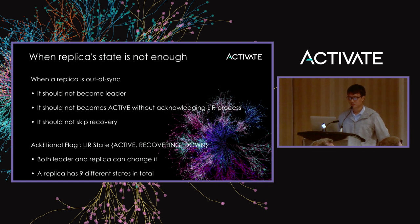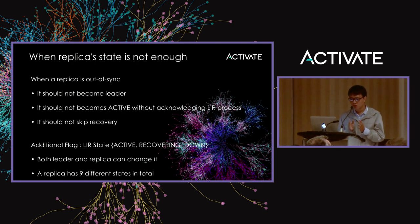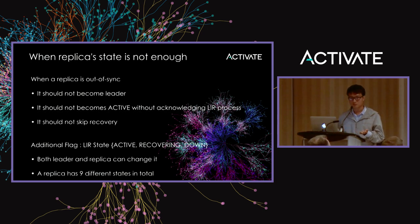But using replica state alone is not enough, because the state may switch from Active to Down when the system is not properly shut down. So we need additional information to prevent an out-of-sync replica from becoming leader, and to prevent a replica from skipping the recovery process on startup. Tim Potter introduced a thing called LIR state. Both the leader and the replica can change the LIR state of a replica, making it a shared resource. So a replica now has not three but nine different combination states — three multiplied by three.